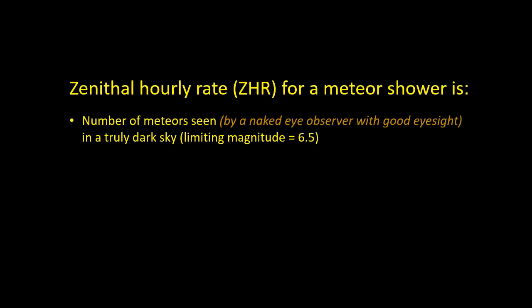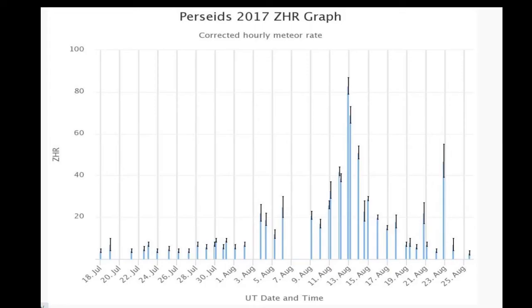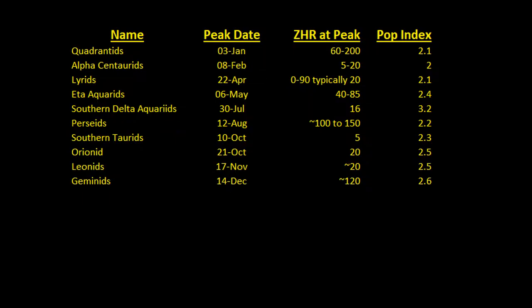One key term when talking about meteor showers is the Zenith Hourly Rate, or ZHR. This is the number of meteors you would see in a truly dark sky with no light pollution, if the radiant is directly overhead and you have an unobscured view of the entire sky. The Quadrantids have a narrow peak — the meteor stream is quite narrow and there's very little activity either side of the peak date — whereas the Perseids have a much broader peak.